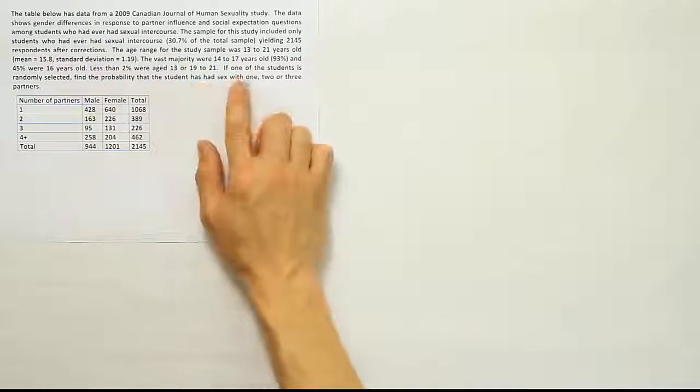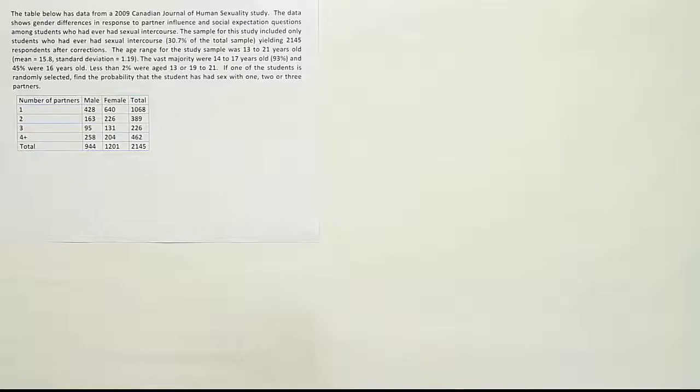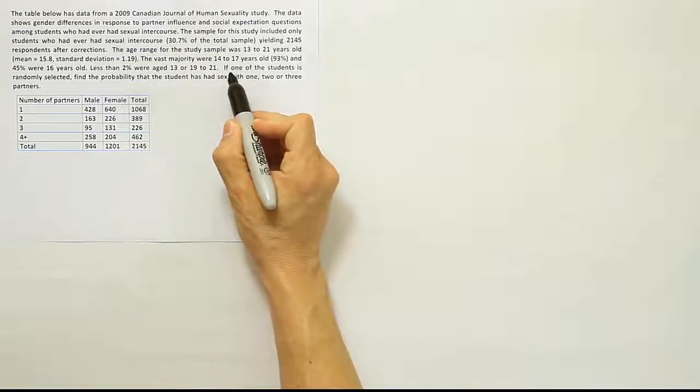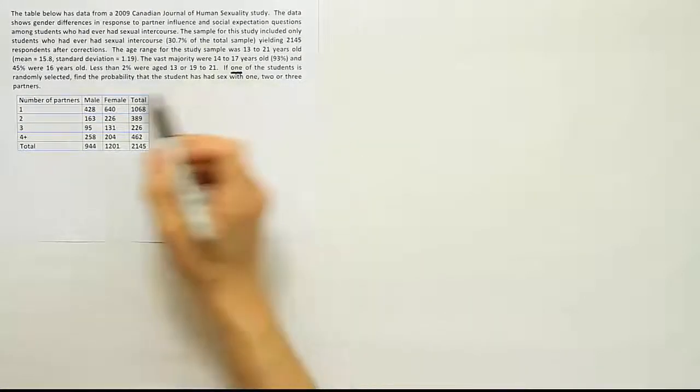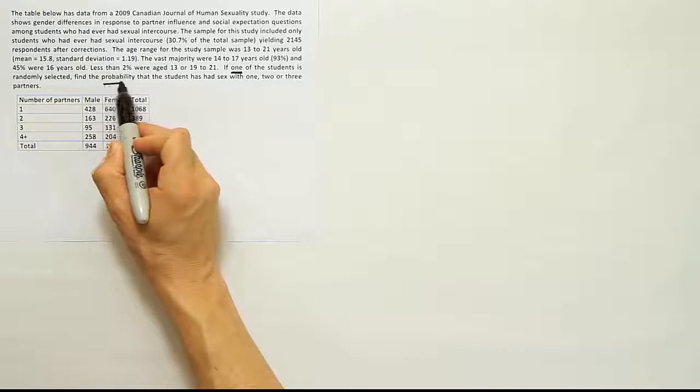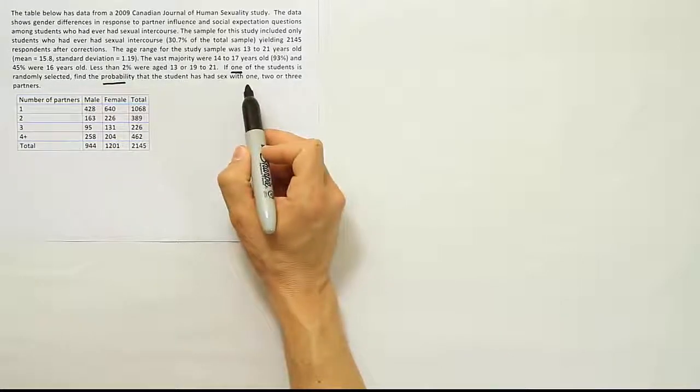They go on to tell you a little more about the data, but the final part says, if one of the students is randomly selected, find the probability that the student has had sex with one, two, or three partners.